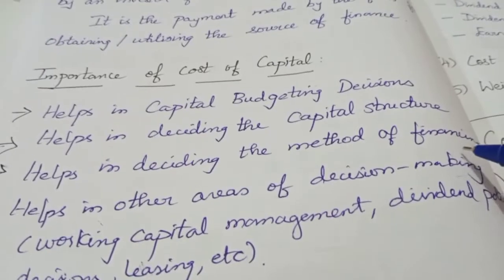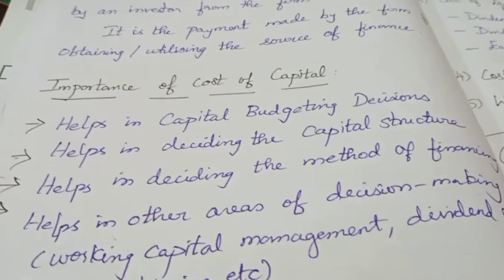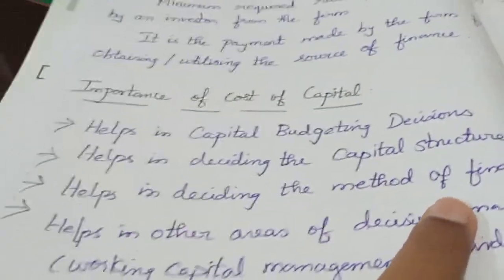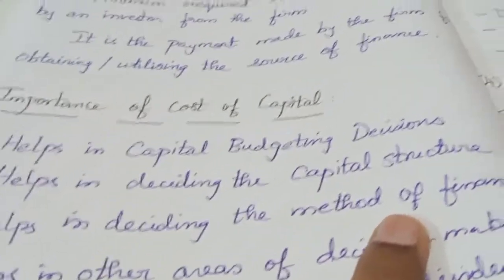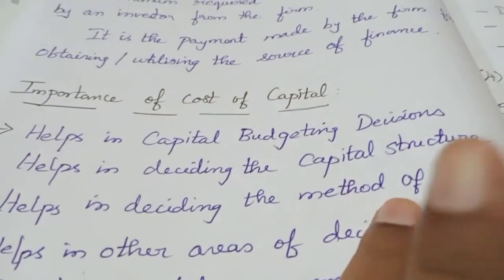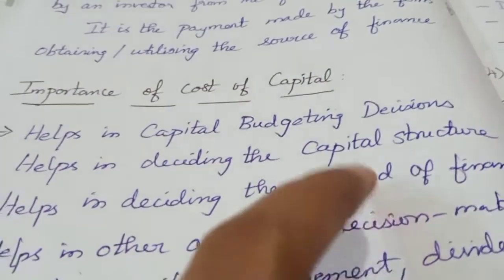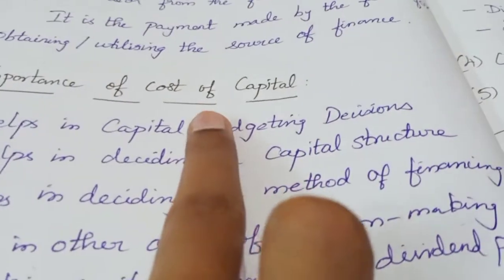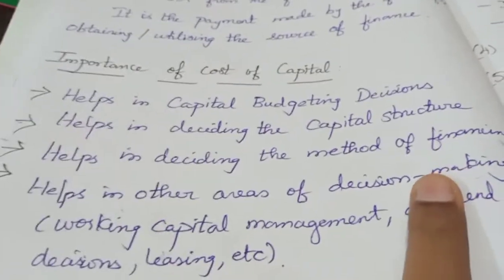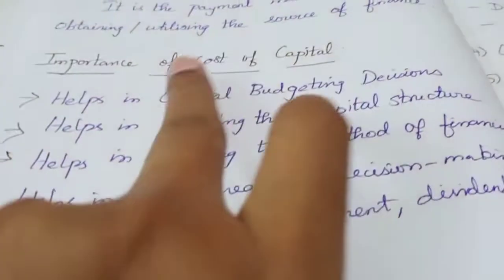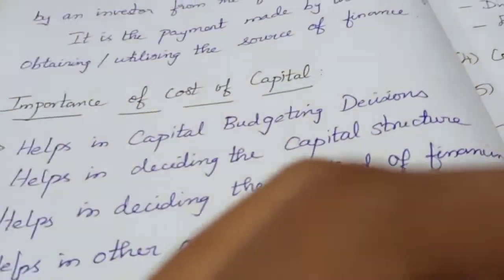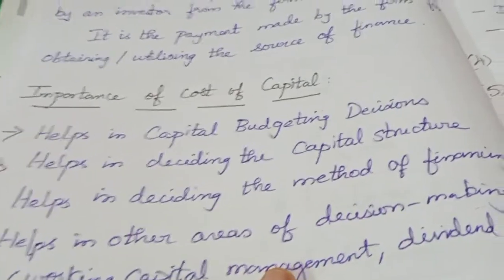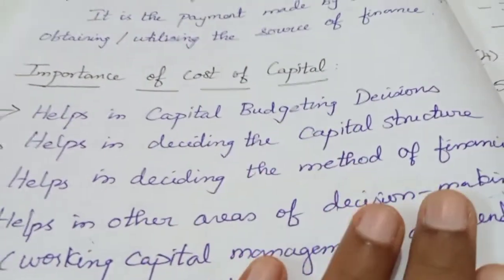Cost of capital helps in deciding the capital structure and the method of financing. We consider the best source of finance and minimize cost of capital. If we go for debt, we minimize cost of capital. So cost of capital guides these major financing decisions in the company.